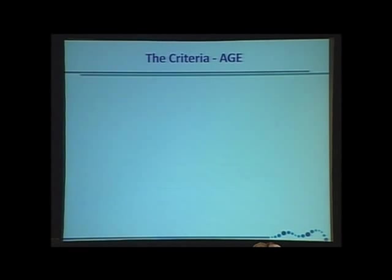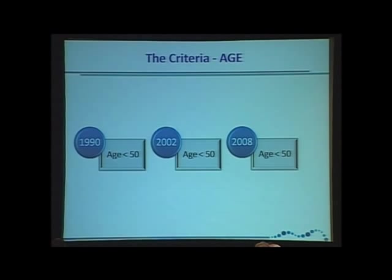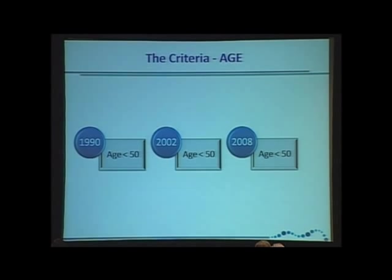Let's take the age. There were three incarnations of the NIH criteria: in 1990, it was reconvened in 2002, and then again in 2008. In 1990, it was decided that age less than 50 would be the appropriate age. If you read that actual article, they openly say there's not obvious data that tells us above 50 there's X percent that someone would develop complications, and less than 50 there's X percent that would. It was spelled out as an arbitrary decision — 'this seemed prudent' was the way it was written.